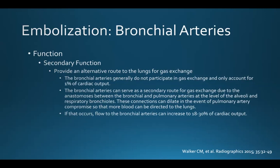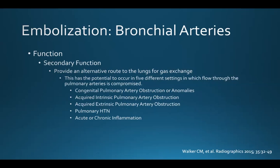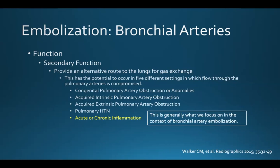These connections can dilate in the event of pulmonary artery compromise so that more blood can be directed to the lungs, and if that occurs, flow to the bronchial arteries can increase up to 18% to 30% of cardiac output. This can recur in five settings in which flow through the pulmonary arteries is compromised: congenital pulmonary artery obstruction or anomalies, acquired intrinsic pulmonary artery obstruction, acquired extrinsic pulmonary artery obstruction, pulmonary hypertension, and acute or chronic inflammation — the last of which is generally what we focus on in the context of bronchial artery embolization.